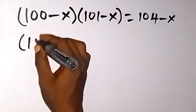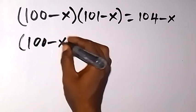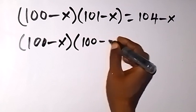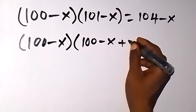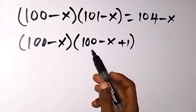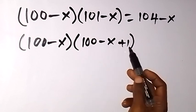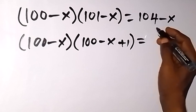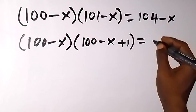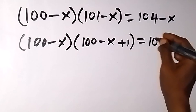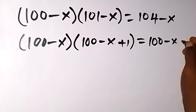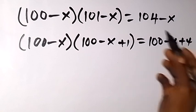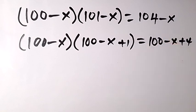From here we can write this as (100 - x) multiplied by (100 - x + 1), so we've written 101 as 100 plus 1. Then on the right side we can write 104 as 100 plus 4, so that will be (100 - x) + 4.